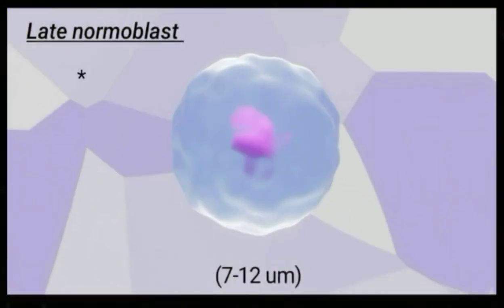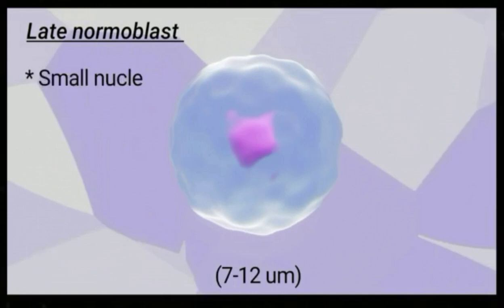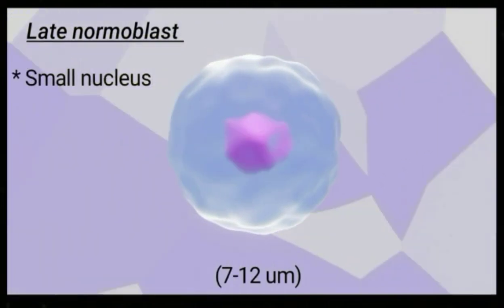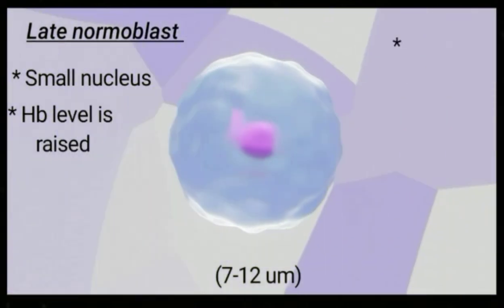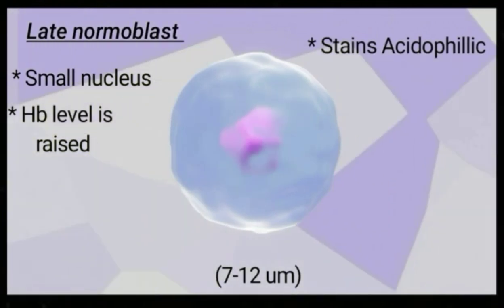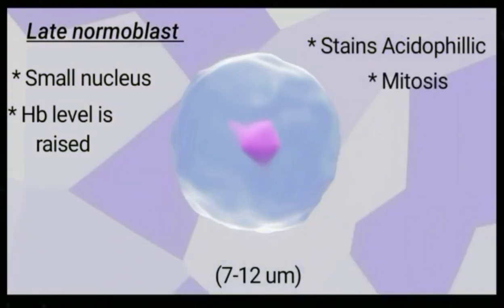Then intermediate normoblast differentiates into late normoblast. The late normoblast has a smaller nucleus, raised hemoglobin level, stains acidophilic, does not undergo mitosis, and the nucleus disappears.